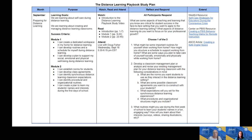Under Month, the topics we're studying for each month are listed. For September, we'll be studying preparing for distance learning — aligned with the modules within the text. Under Purpose, you'll find the learning goals and success criteria outlined for each individual module. Under Watch, Read, and Attend, this clarifies exactly what the expectations are — what you'll be watching, reading, and when you'll be attending synchronous meetings. This particular recording will be linked in next week under the Watch portion so you can refer back to it.